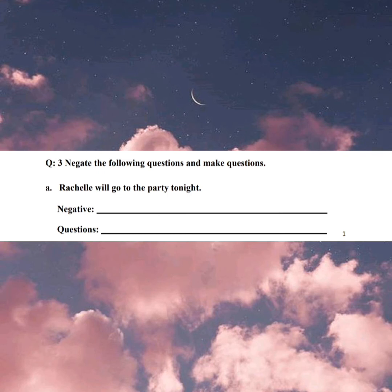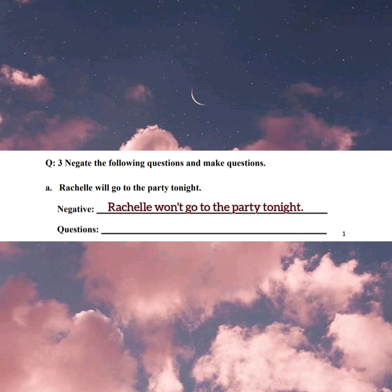Negate the following sentences and make questions. Rochelle will go to the party tonight. We have to identify the verb to make it negative: 'will go' becomes 'will not go.' So: Rochelle will not go to the party tonight. To make it a question, you just need to switch the subject and 'will.' The question will be: Will Rochelle go to the party tonight?